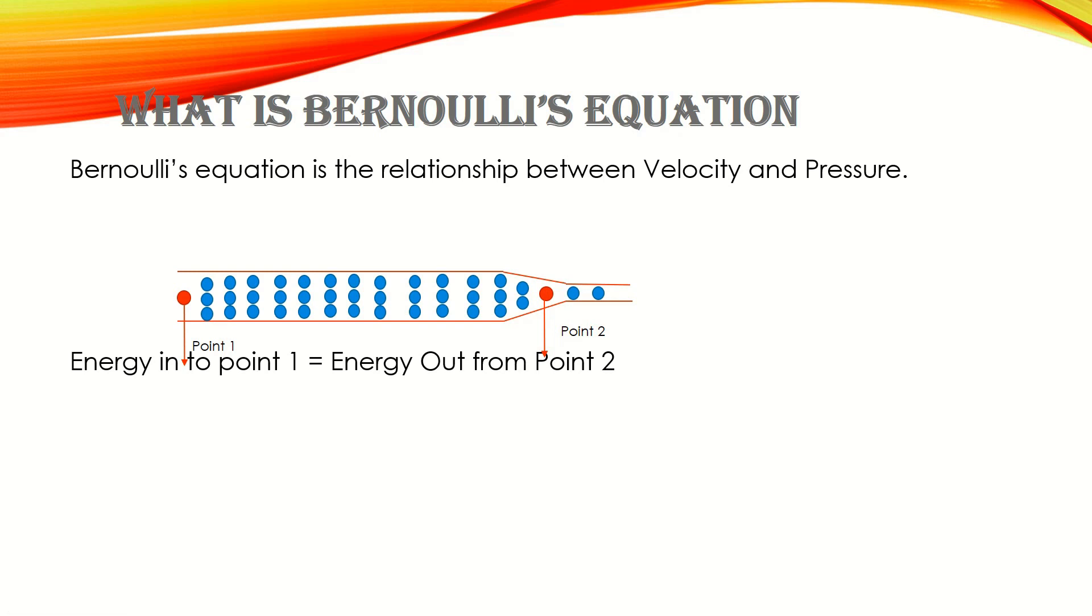Energy into point one equals energy out from point two. This is the Bernoulli's equation: P1 + ½ρv1² + ρgh1 = P2 + ½ρv2² + ρgh2. Basically this is the sum of all energies at point one: pressure energy, kinetic energy, potential energy. Similarly, all energies at point two. P represents pressure, d represents density, v represents velocity, and h represents height.